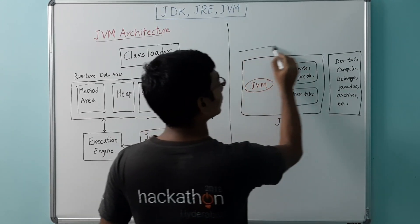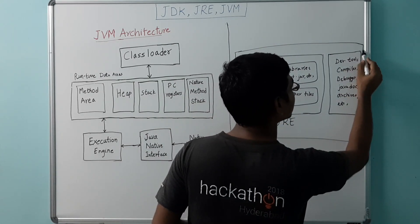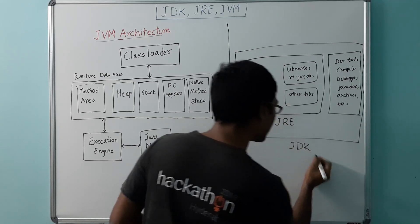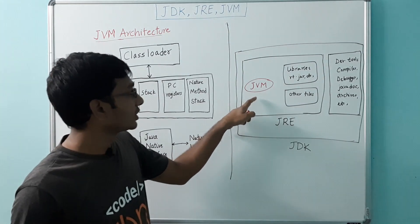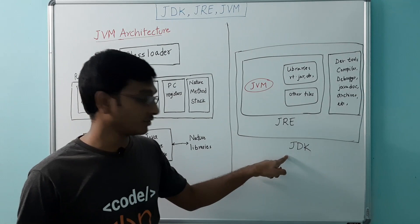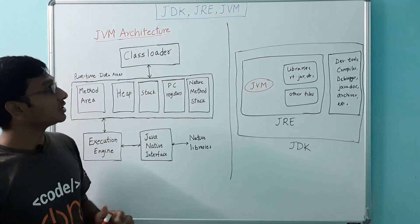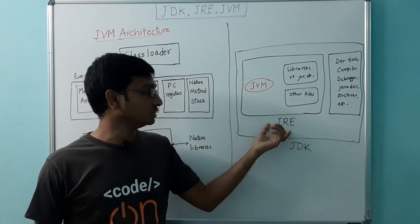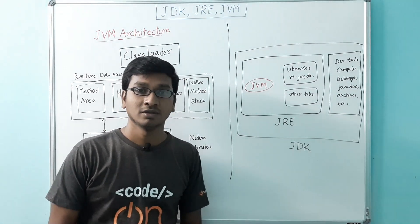This whole set we can call JDK. To keep it simple: JVM is a subset of JRE, and JRE is a subset of JDK. In this video we discussed JVM architecture, what JRE is, and what JDK is. That's all for this video, thanks for watching.